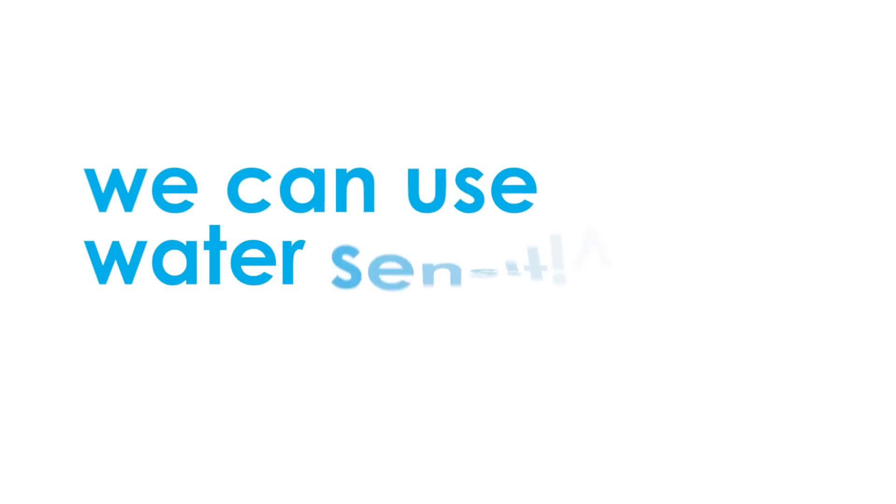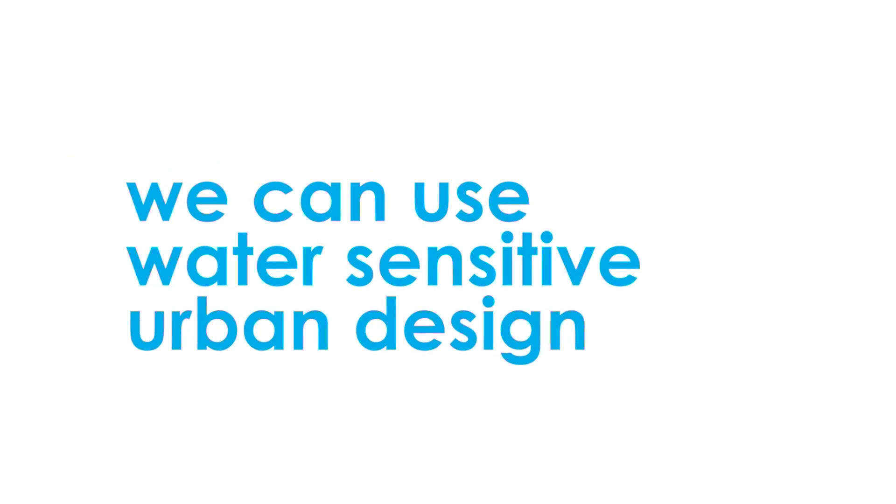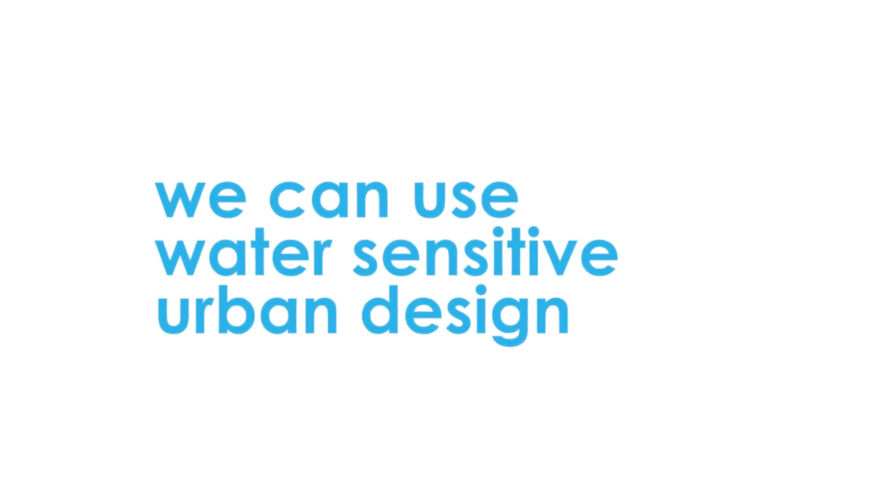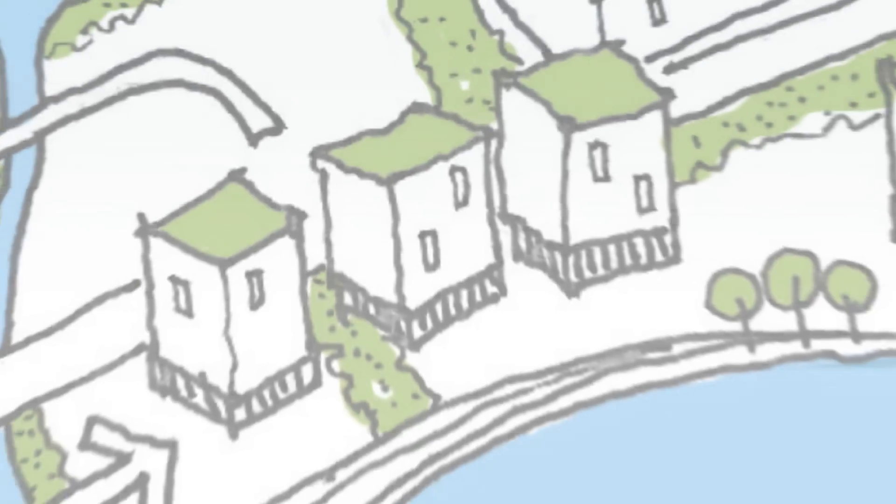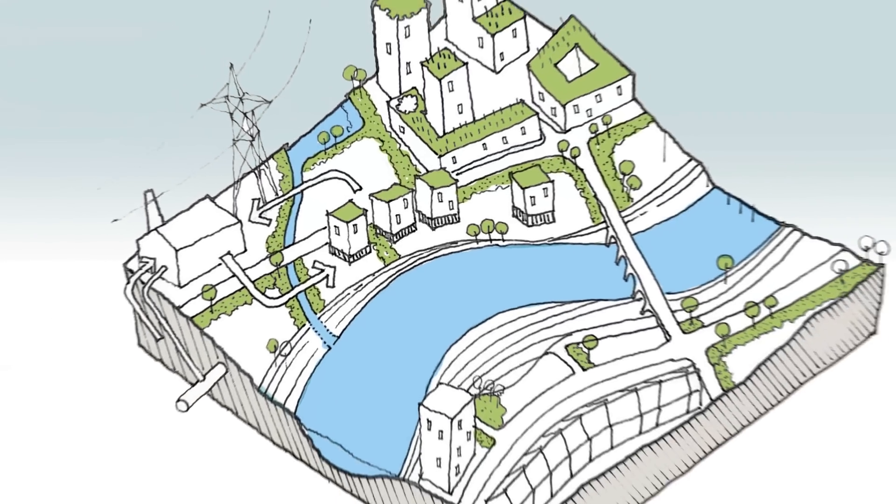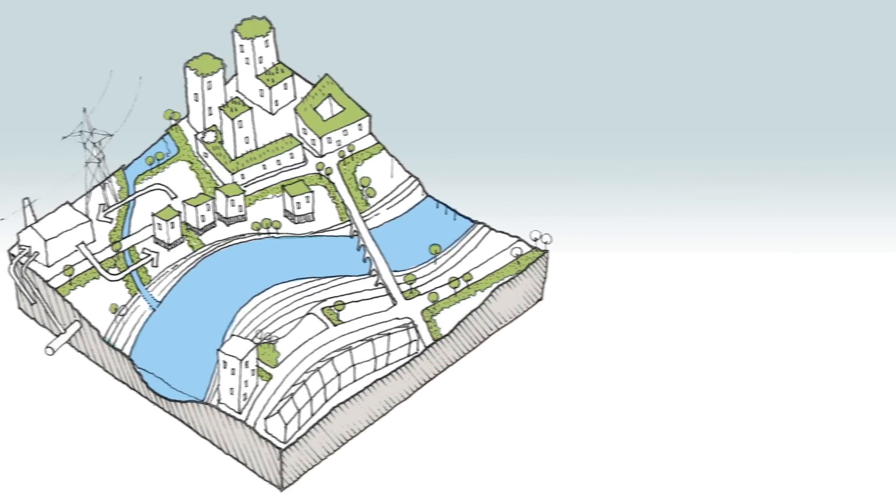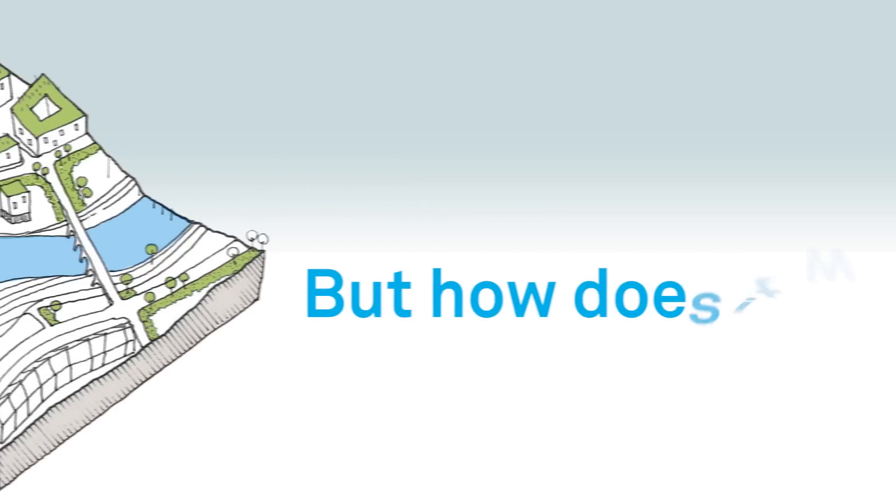We can use water sensitive urban design when designing our homes and also for large cities and towns. Even a city that already has lots of paving and concrete can be changed to use rainwater much better. But how does it work?